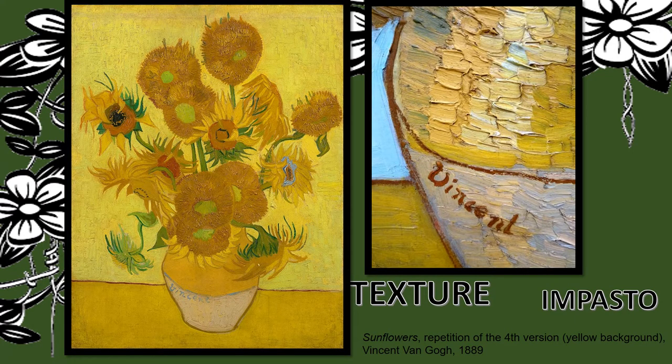One of van Gogh's most famous flower paintings was Sunflowers, painted in 1889. One of the things to know about his art is that he used a lot of texture. He actually painted so thickly that you can see the paint coming up off of the canvas. This technique is called impasto. Sometimes artists would even take a palette knife instead of a brush to apply the paint right to the canvas, mixing the colors directly on it.